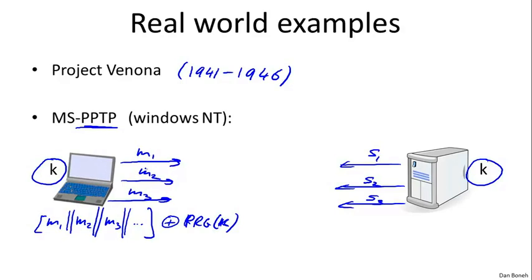The problem is the same thing is happening also on the server side. In other words, all the messages from the server are also treated as one long stream. They're all concatenated together, and encrypted using unfortunately the same pseudo-random seed. In other words, using the same stream cipher key.